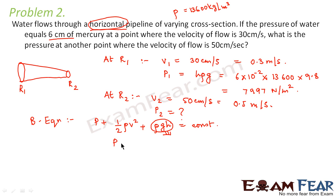we will apply only the other two terms. So we can say that P1 plus half rho V1 square should be equal to P2 plus half rho V2 square.